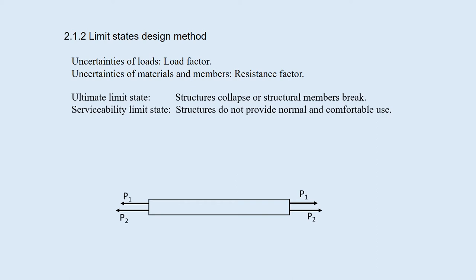The ultimate limit state is the state where structures collapse or structural members break. The serviceability limit state is the state where structures do not provide normal and comfortable use. The ultimate limit state is verified by equation 2.2. The sectional force multiplied by the load factor must be within the ultimate strength divided by the resistance factor.